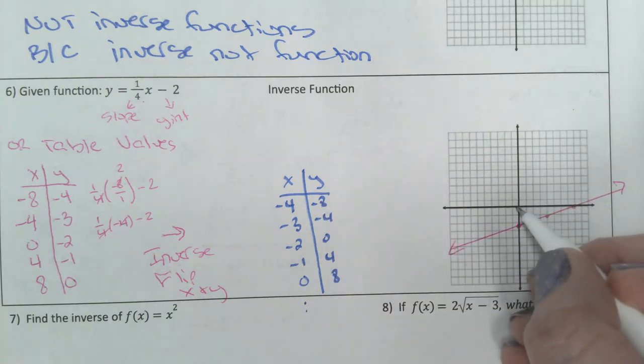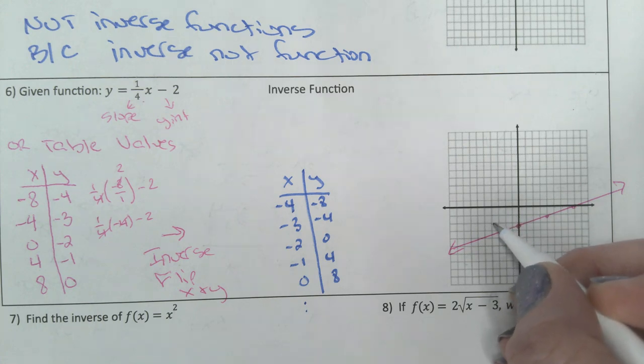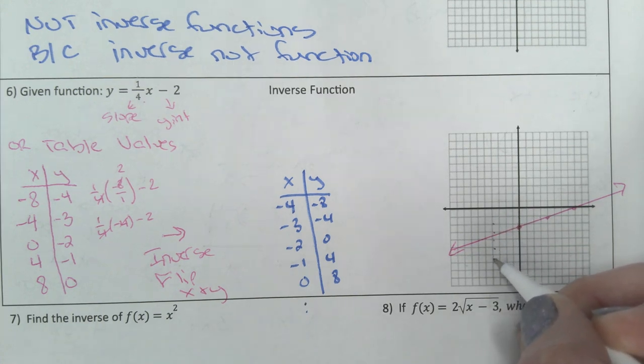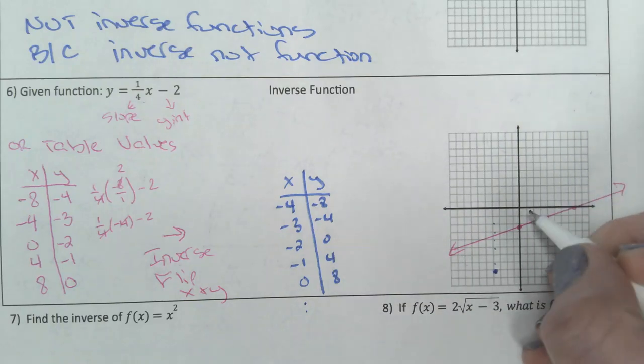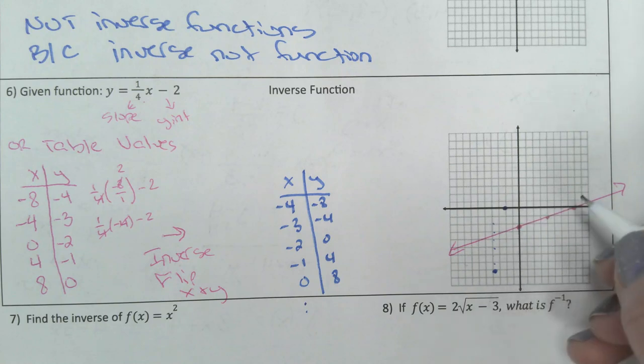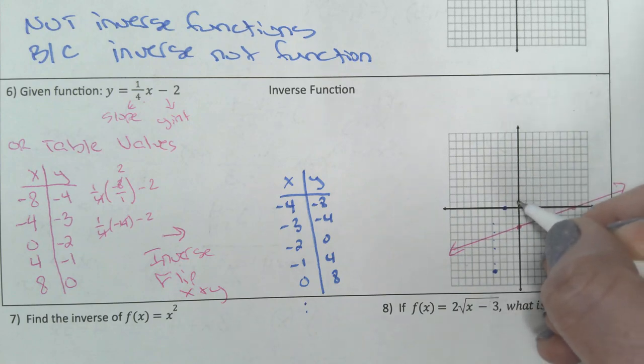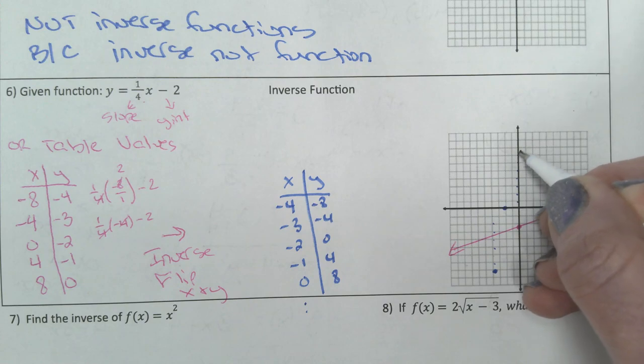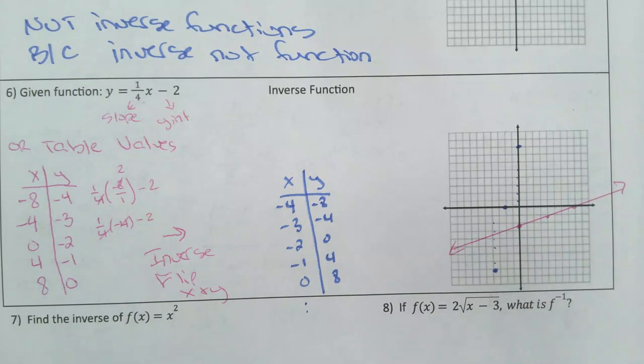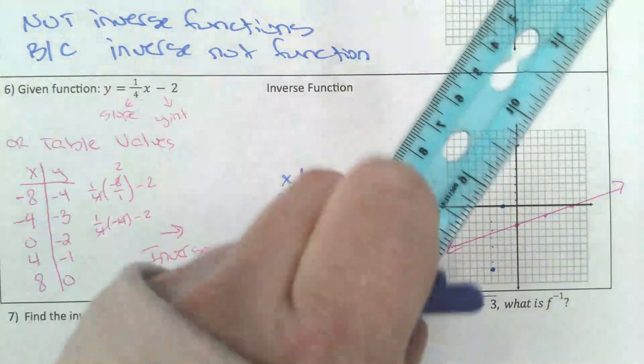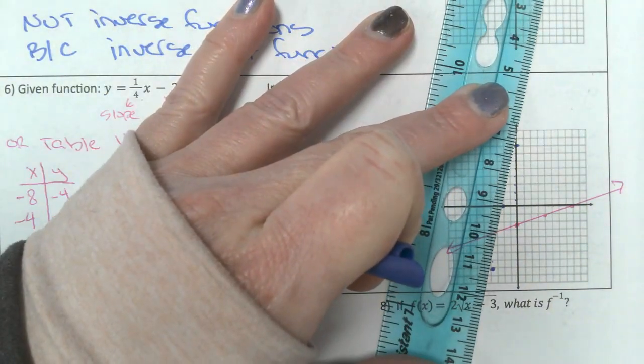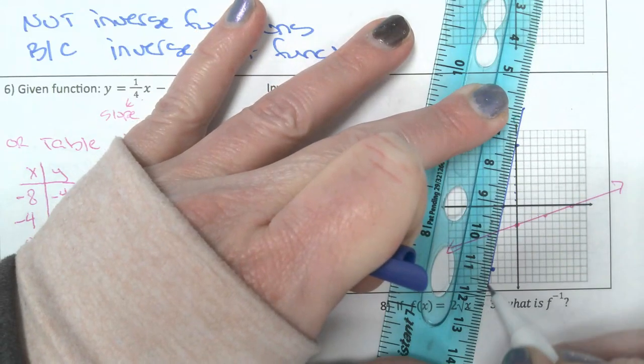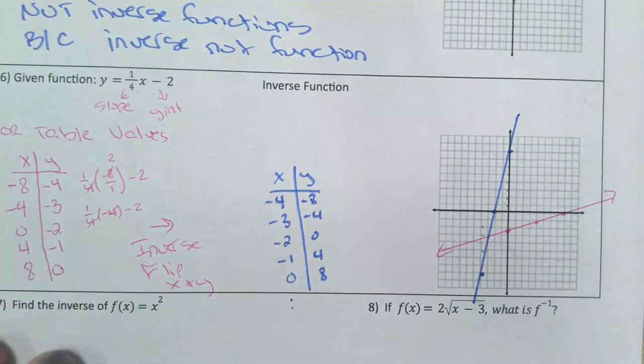I'm going to plot negative 2, 0, and 0, 8. Any 2 points make a line. I ended up picking 3 of them so that I could have the most accurate line possible.